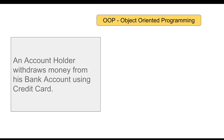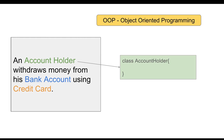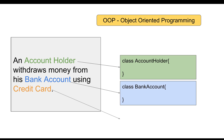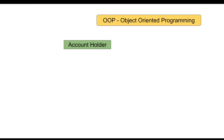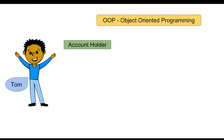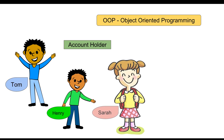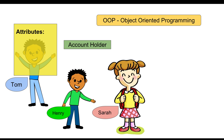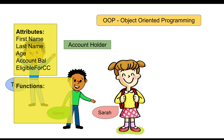Let us begin. In the last session we already saw how to look into a scenario and find out the nouns or entities and then design or define our classes. We also saw how an account holder looks in the real world. For example, Tom is an account holder, and so are Henry and Sarah. Any account holder will have attributes or variables like first name, last name, age, account balance, and eligible for credit card, and they can have functions like testing the eligibility for credit card, deposit money, withdraw money, and so on.